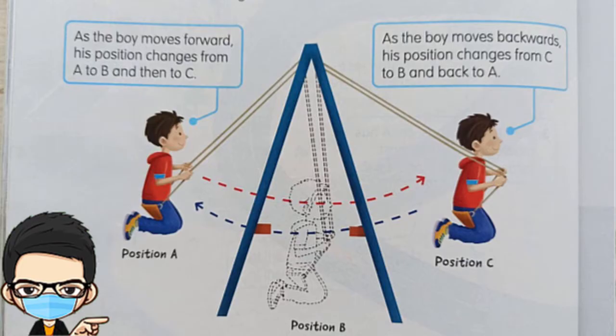Look at the picture. The boy on the swing changes his position as his direction of movement changes. As the boy moves forward, his position changes from A to B, then to C.